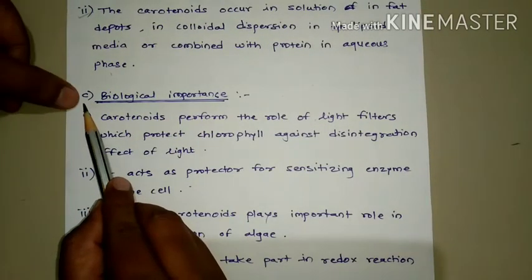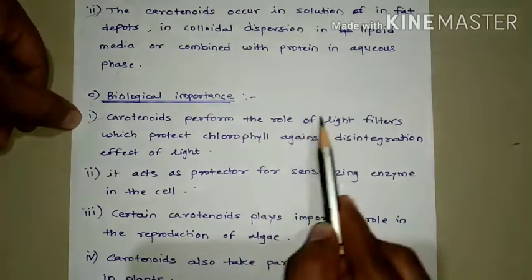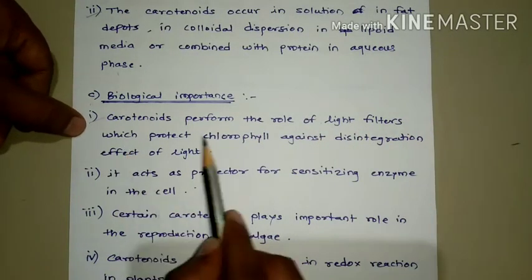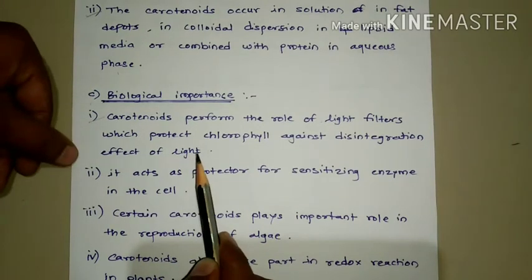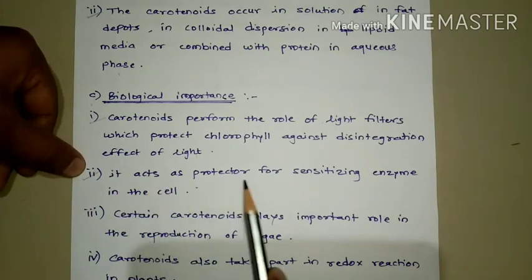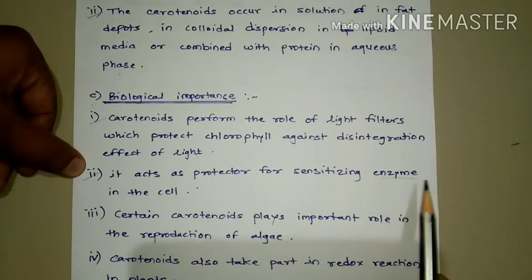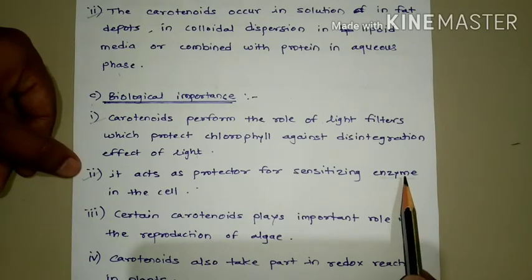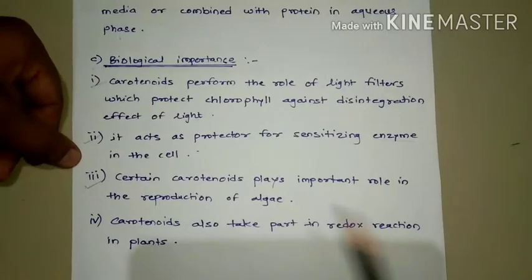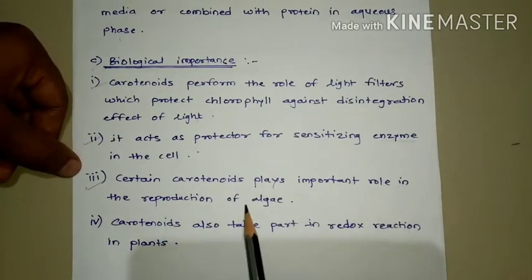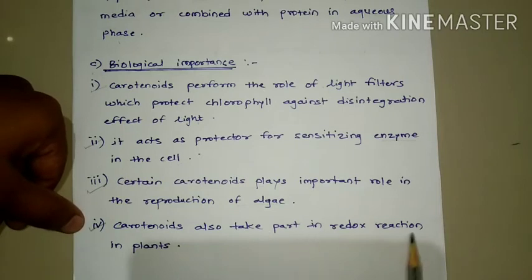Next is the biological importance. First: carotenoids perform the role of light filters, which protect chlorophyll against the disintegrating effect of light. Second, they act as a protector for sensitizing enzymes in the cell — enzymes are biological catalysts that alter the rate of biological reactions. Third, certain carotenoids play an important role in the reproduction of algae. Fourth, carotenoids also take part in redox reactions in plants.